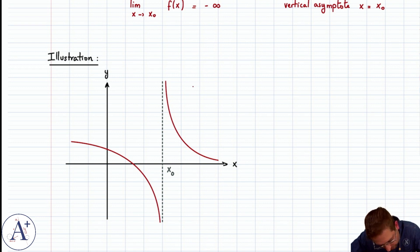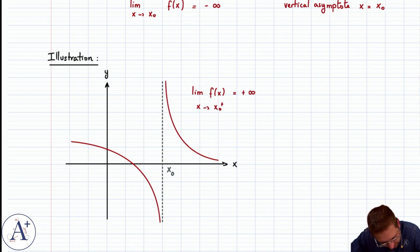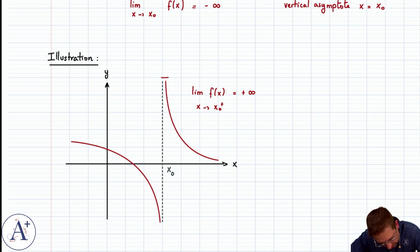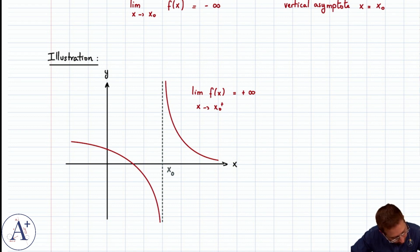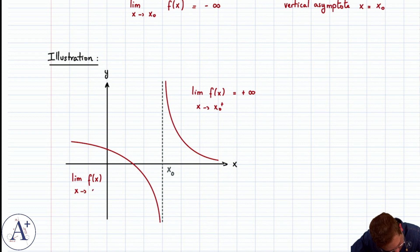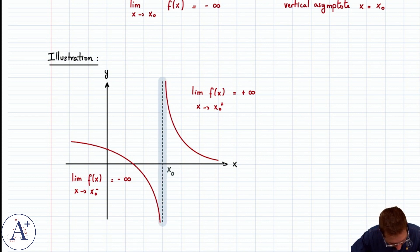Here we have the limit of f of x as x approaches x0 plus is plus infinity — pick any value you want, all you have to do is bring x closer to x0 and f of x will exceed that value, even if it's very large. And on the left, we have that the limit of f of x as x approaches x0 minus, so from the left, is minus infinity. And this is our vertical asymptote.